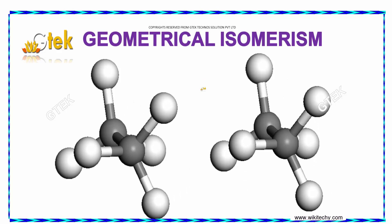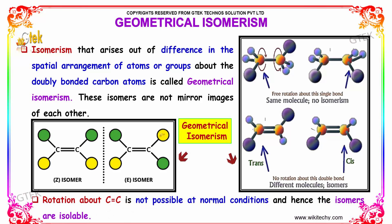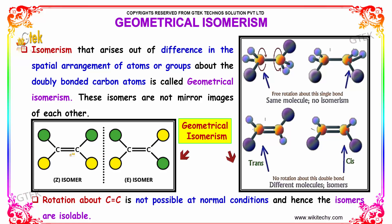Geometrical isomerism is the isomerism that arises out of difference in the spatial arrangement of atoms or groups about the doubly bonded carbon atoms. These isomers are not mirror images of each other. The rotation about C=C is not possible at normal conditions because steric hindrance is present, so these isomers are isolable.